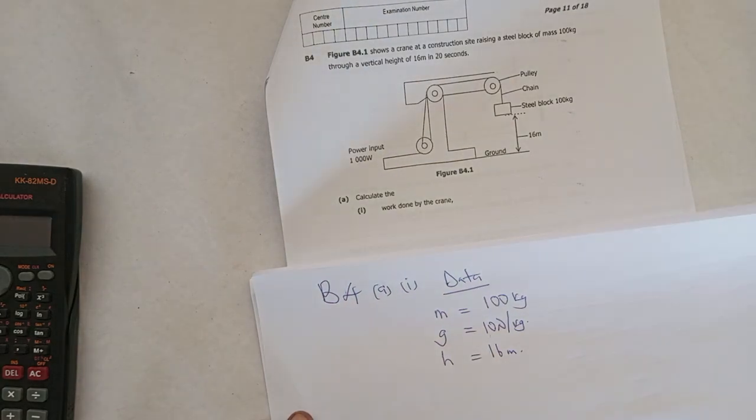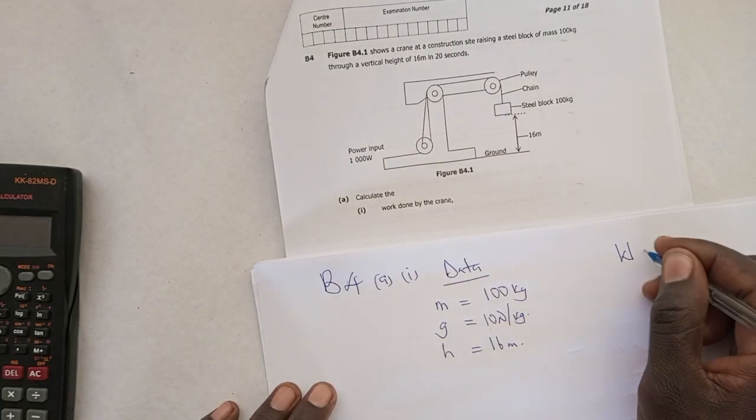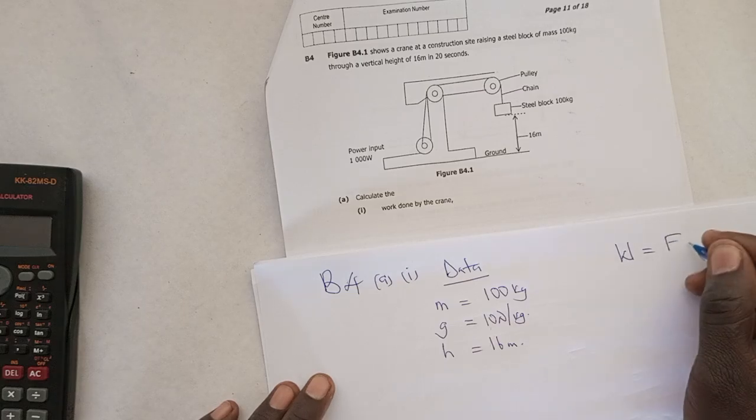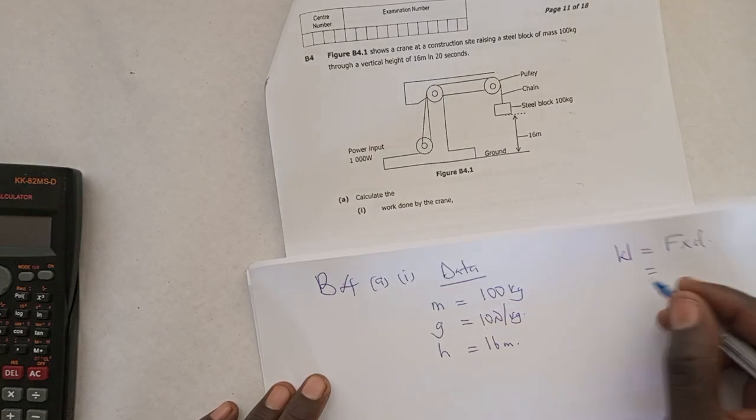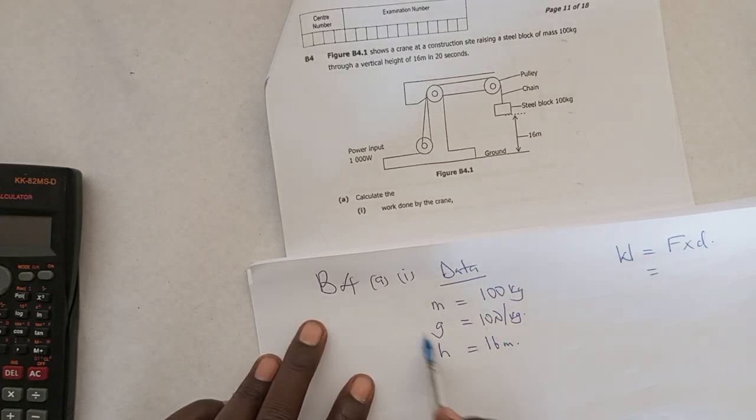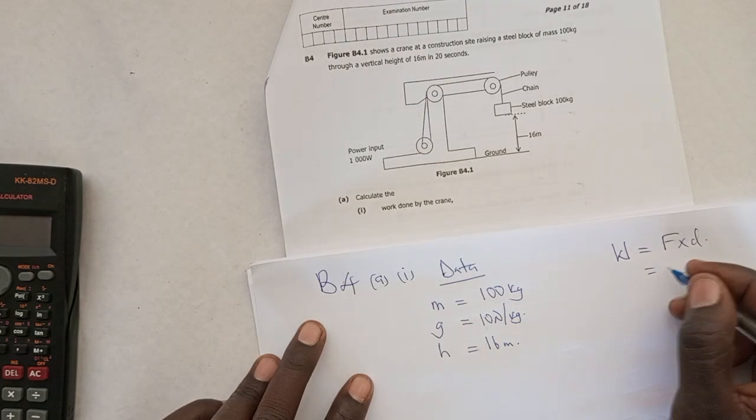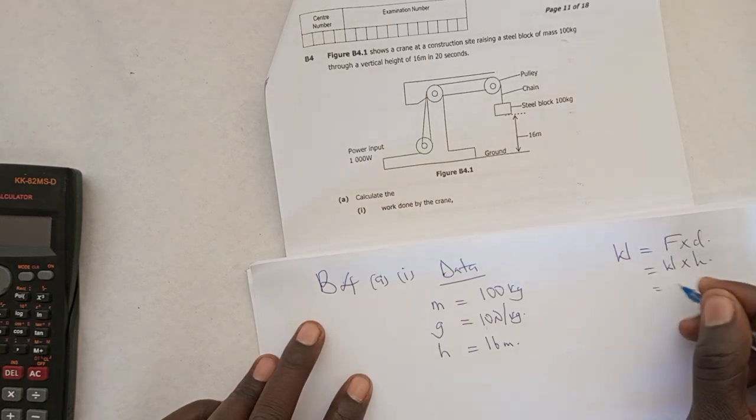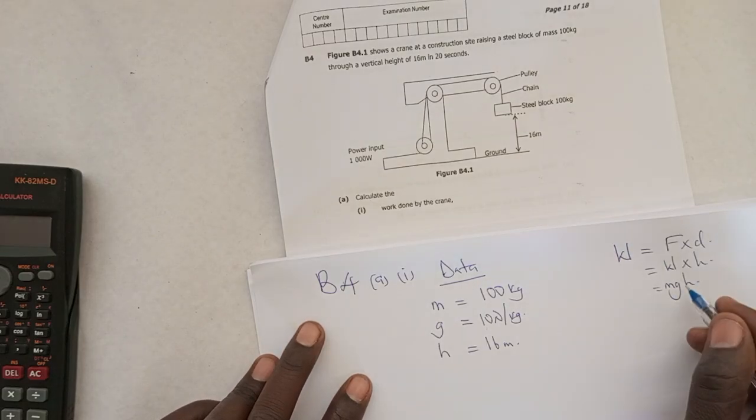The question is calculate work done by the crane. What is work done? Basically, work done is the product of force and the distance in the direction of force. So work done here would be force times distance. In this case, the force would be weight times distance, which is height.